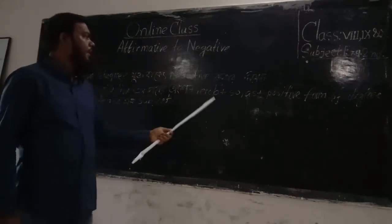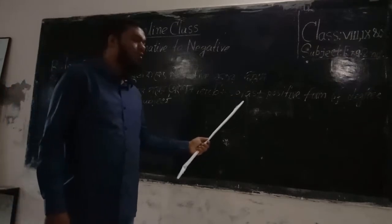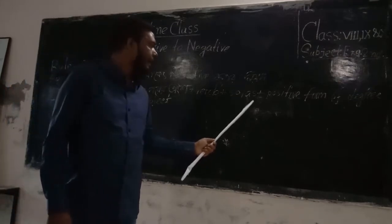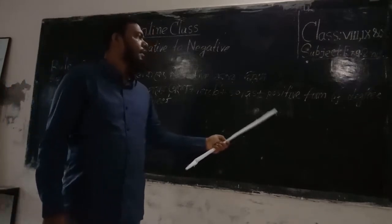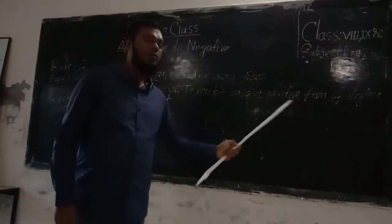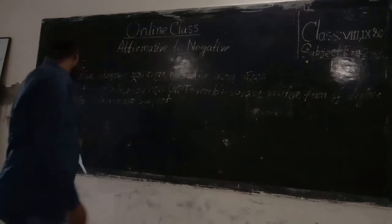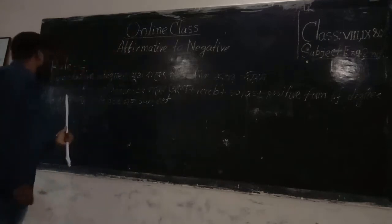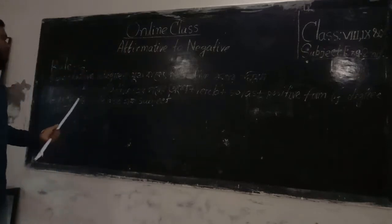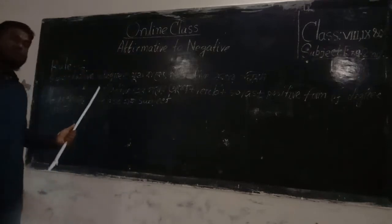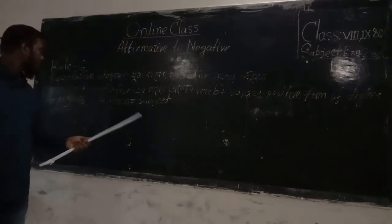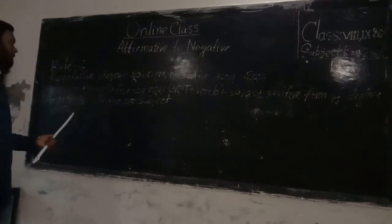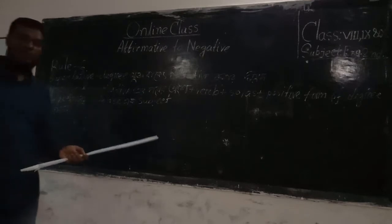The structure is: no other + [part after superlative] + verb (is/are) + so/as + positive form of the degree + as + subject of the sentence. For example: